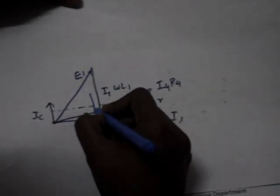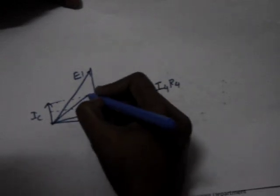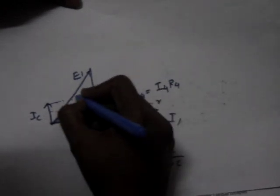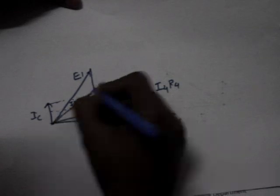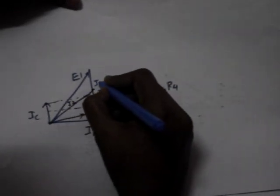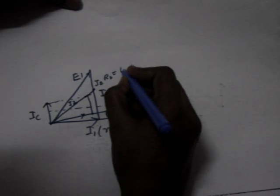So this one is Ic, this is I2, this is I2 R2, which is E2.